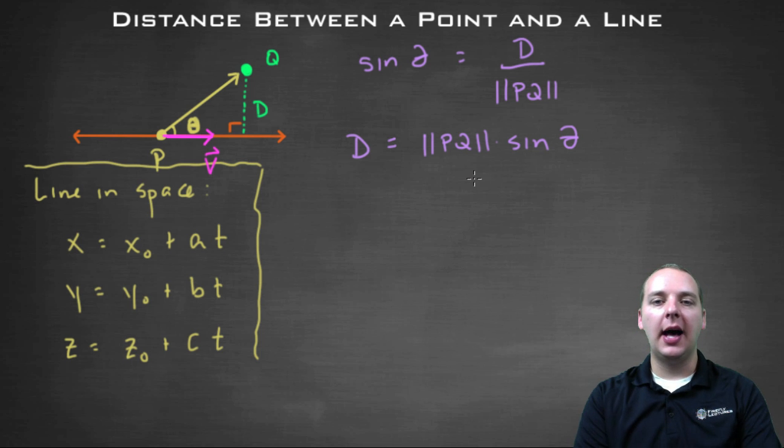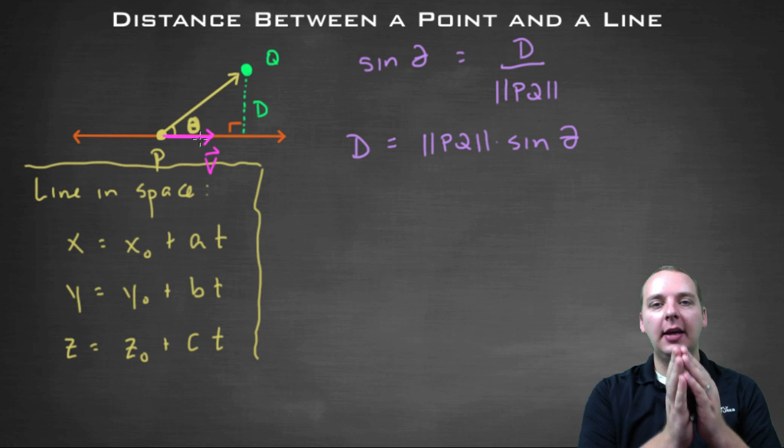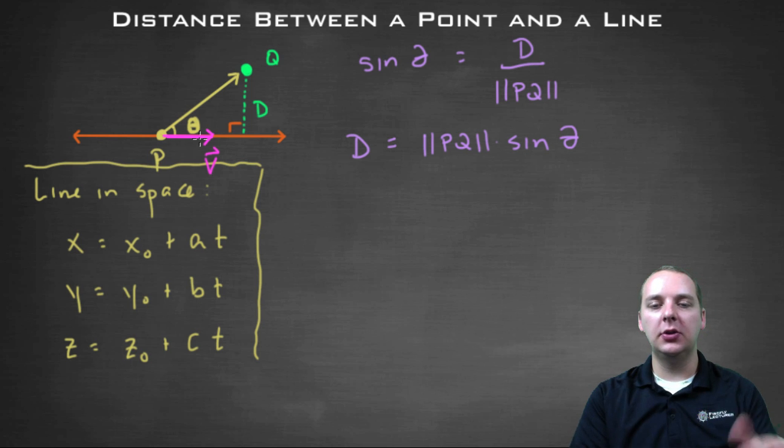There's just one problem though. I don't know what the sine of theta is. I don't, in fact, I don't even know what this angle is. Now there are a couple different routes you could go. There are some ways that you can find angles between two vectors, but there's actually a shorter way to get this end result. I'm going to show you a clever little observation here.